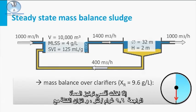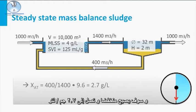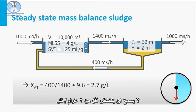If you take the maximum return sludge concentration of 9.6 grams per liter and the mass balance with the storm water flow of 1000 cubic meters per hour, you can calculate that the new concentration in your aeration tank will become as low as 2.7 grams per liter. This is fine, since one of the rules of thumb is that the concentration in the aeration tank is not allowed to drop below 2 grams per liter.